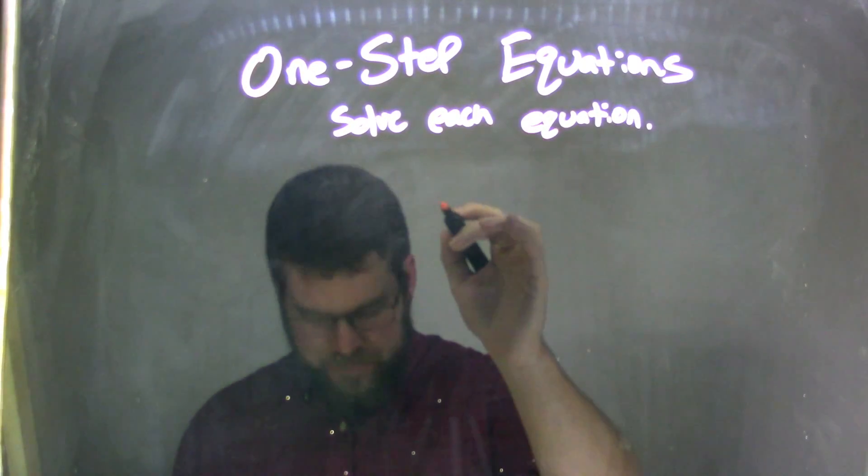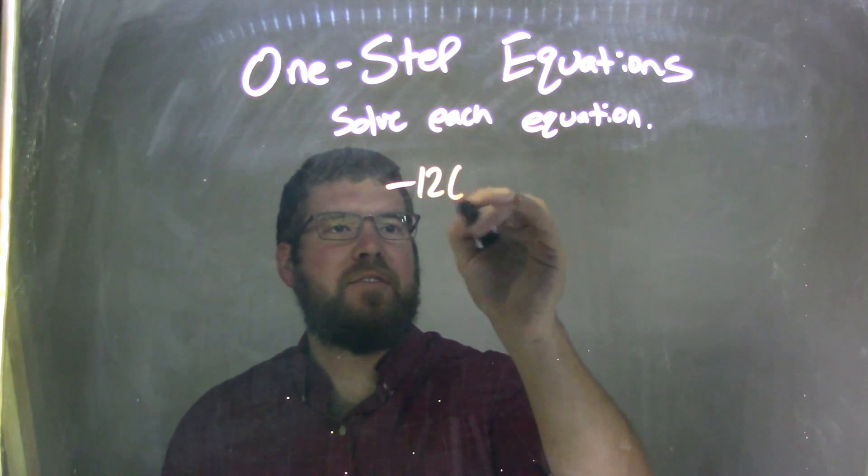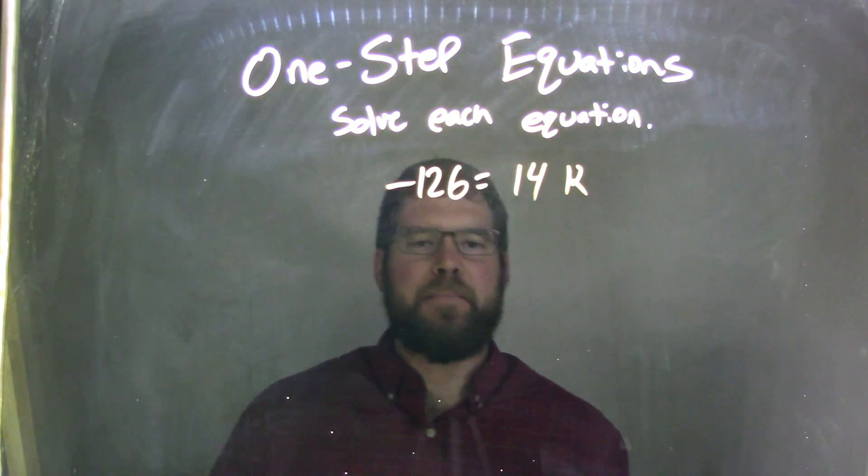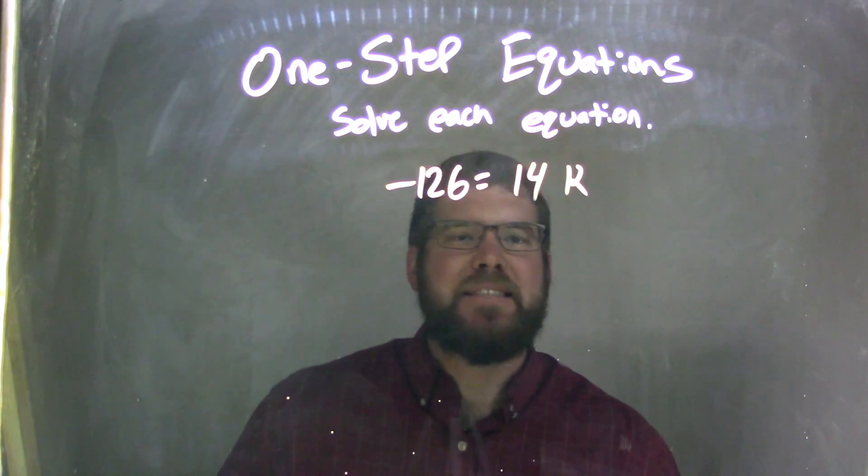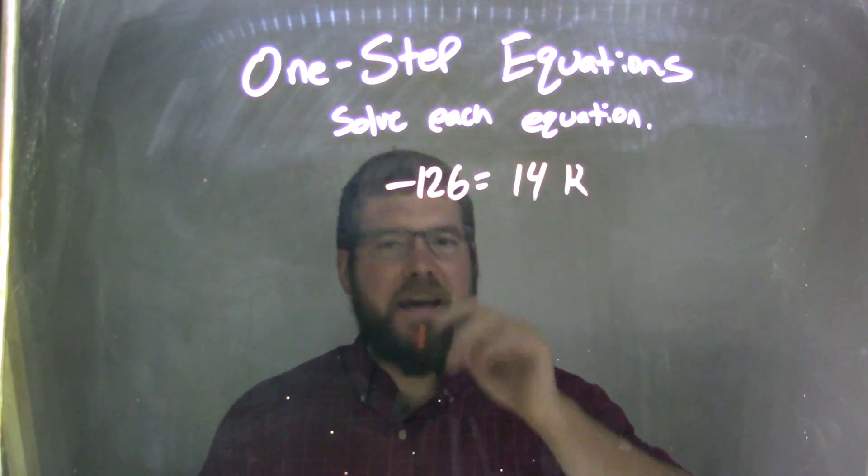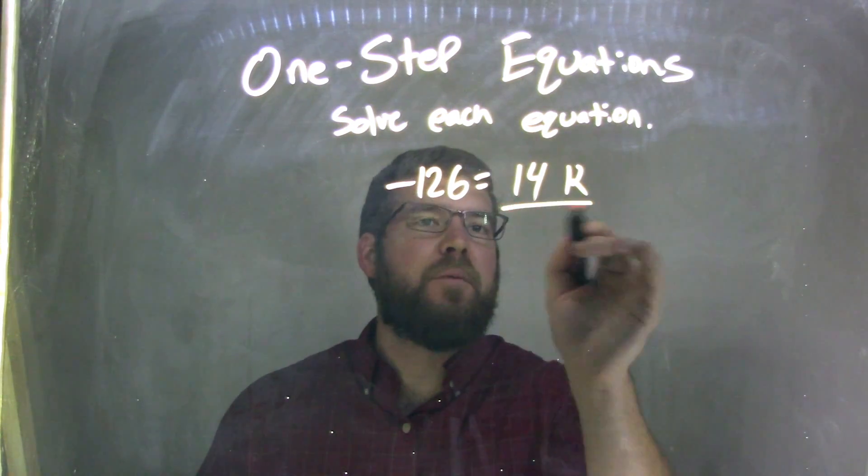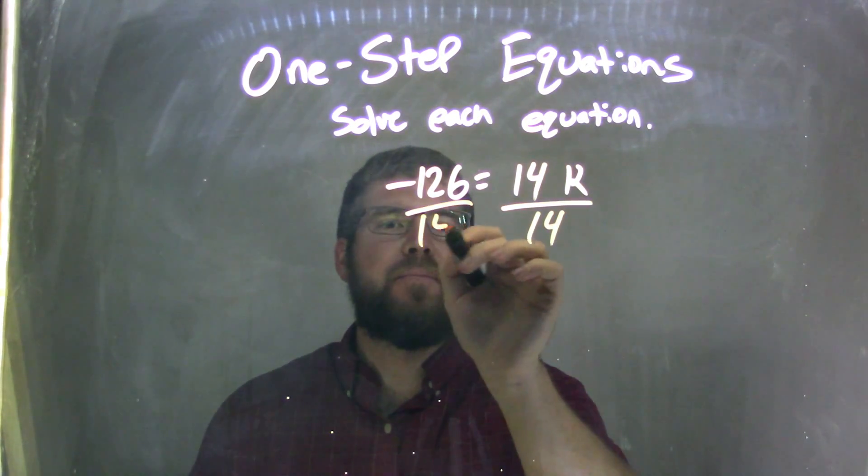If I was given this equation, negative 126 equals 14k. Well, negative 126 equals 14k. Now, 14k is 14 times k, so opposite of multiplication is division, so I'm going to divide by 14 to both sides. And here's where it gets tricky.